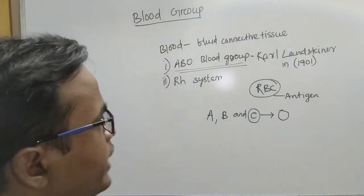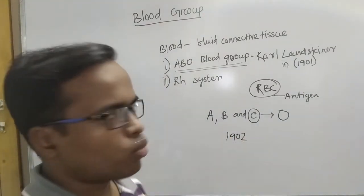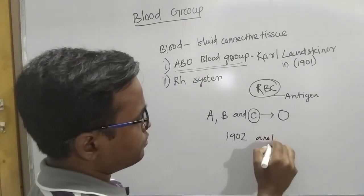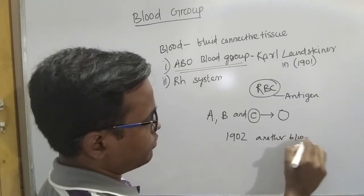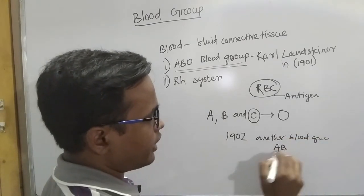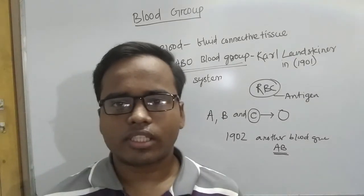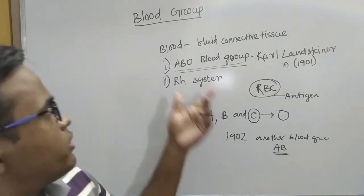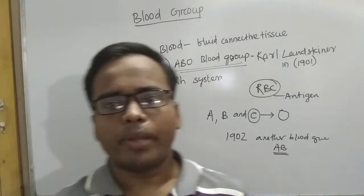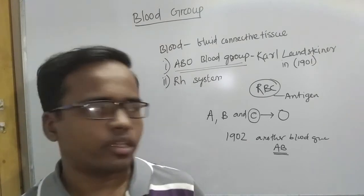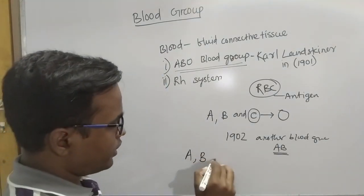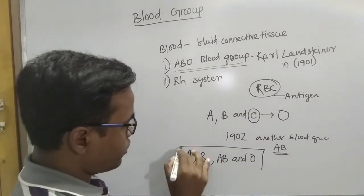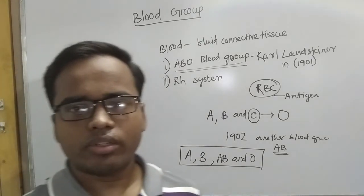After 1902, two co-workers and co-scientists discovered another blood group, that is AB. So the ABO blood group system mainly consists of four types of blood group: A, B, AB, and O.